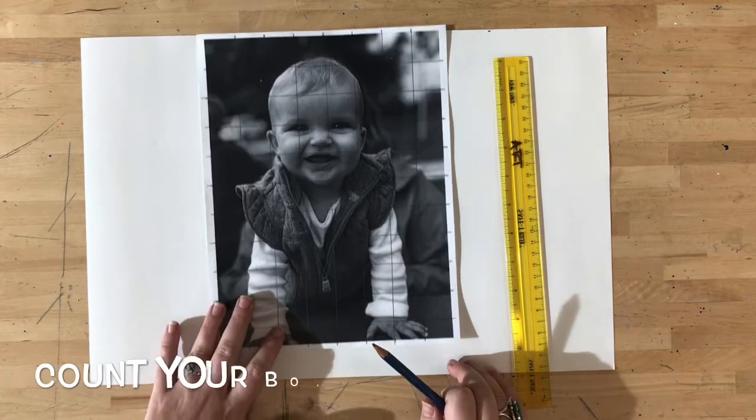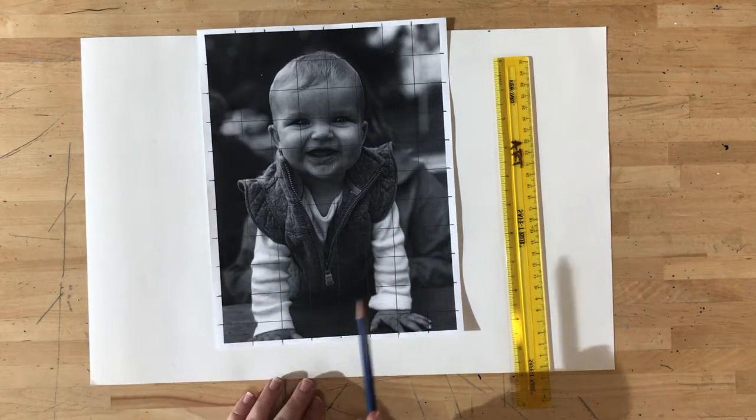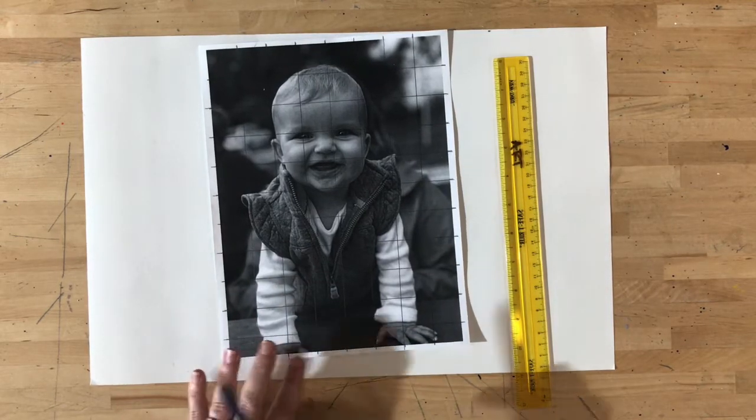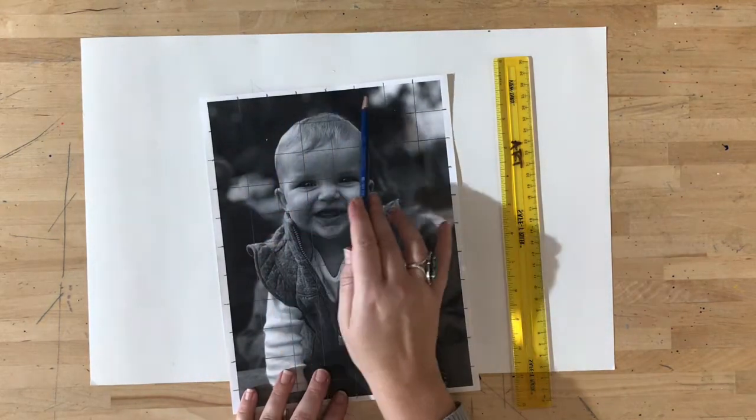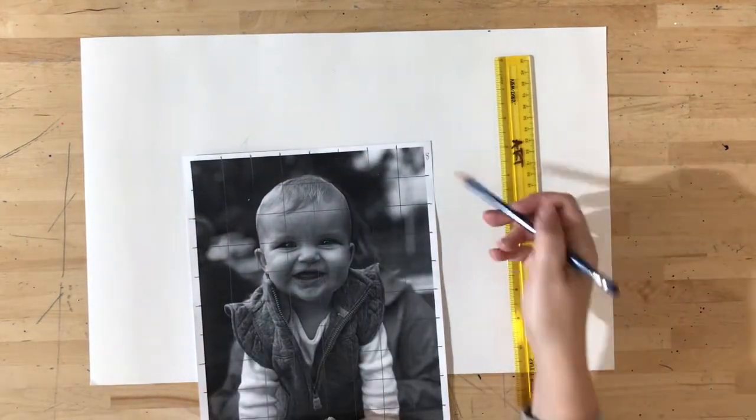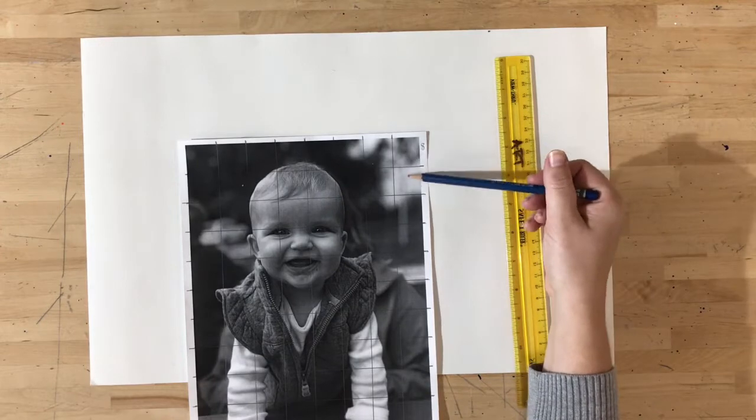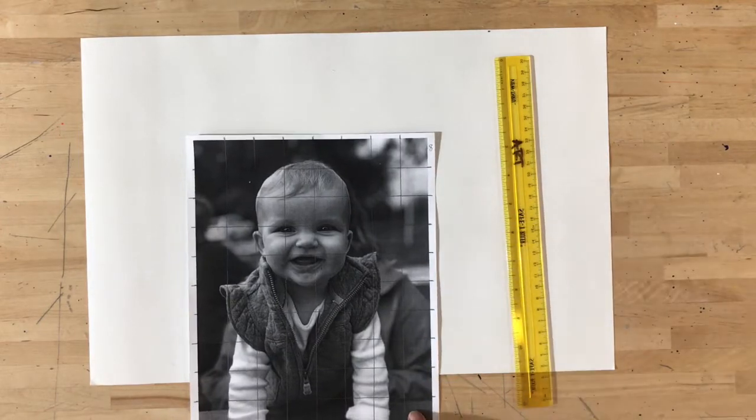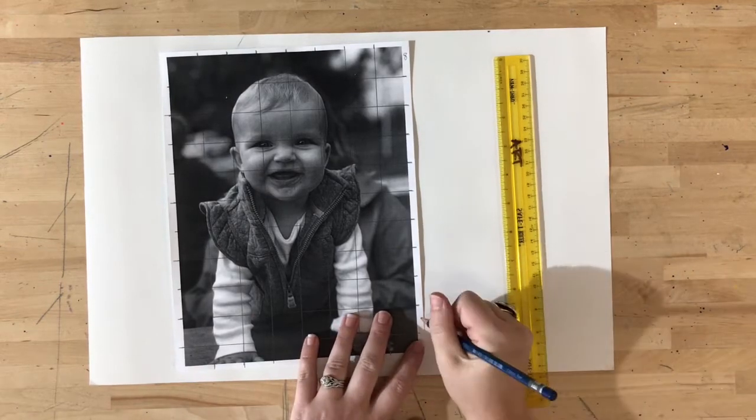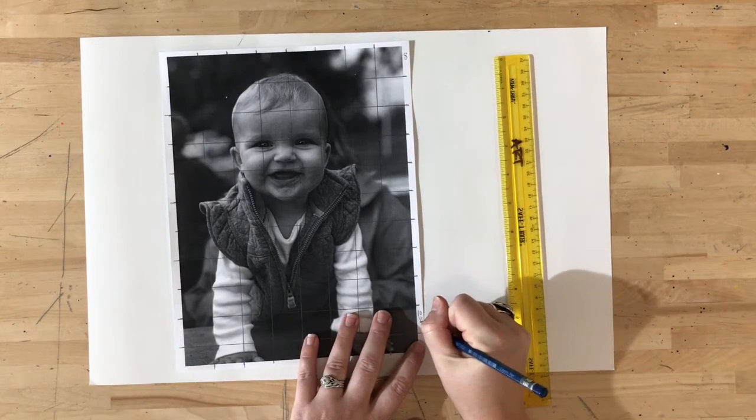So the first thing we have to do is we have to count our boxes. So when I did my grids, I did my grids at one inch by one inch and I'm gonna go ahead and count them. So mine is eight boxes wide. I always like to write that down so I don't forget. And mine's about ten and a half boxes tall. Okay? So I'll write ten and a half.